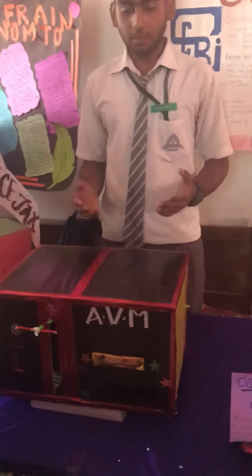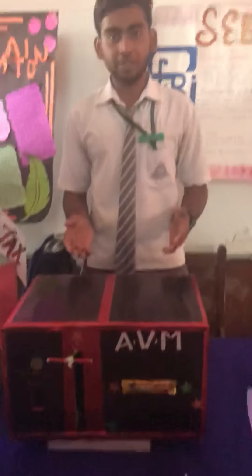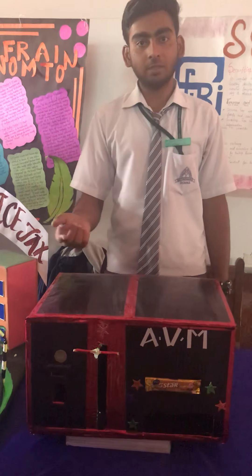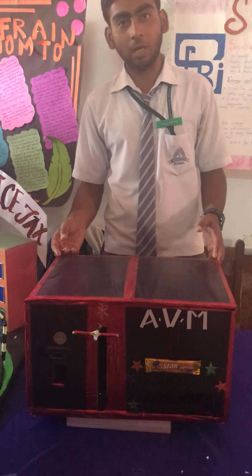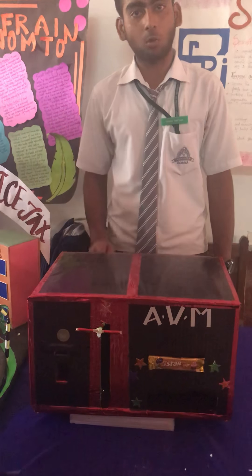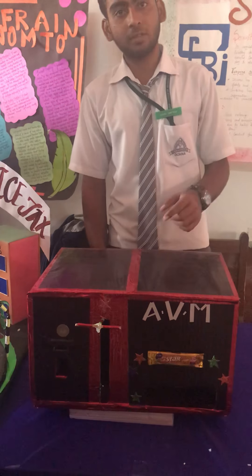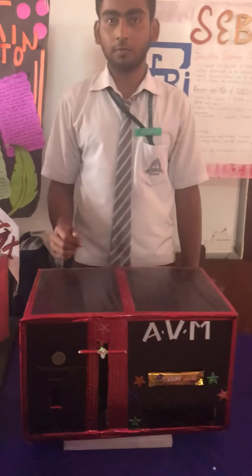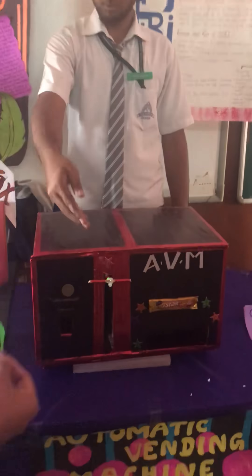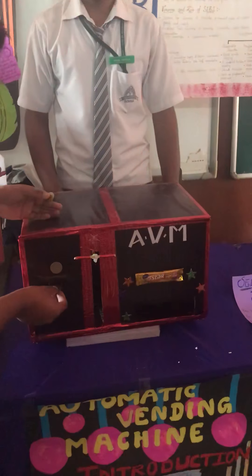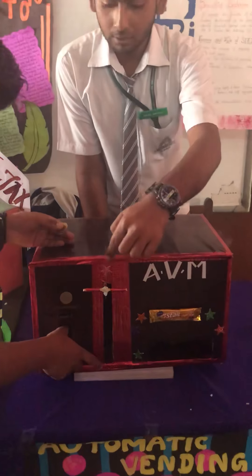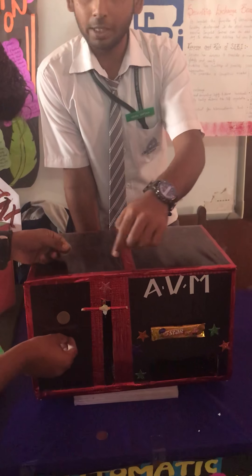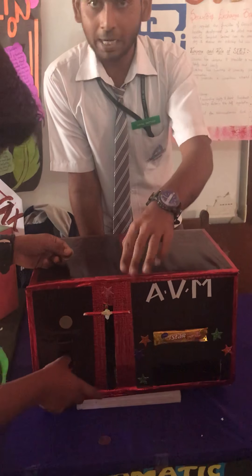Good morning sir. This is our model of an automatic vending machine — a chocolate vending machine. If you insert a 1 rupee, 2 rupee, or 5 rupee coin, the machine will deny the coin and you will not get a chocolate. He is demonstrating: inserting a 2 rupee coin — the coin is denied. A 5 rupee coin is also denied by the machine.